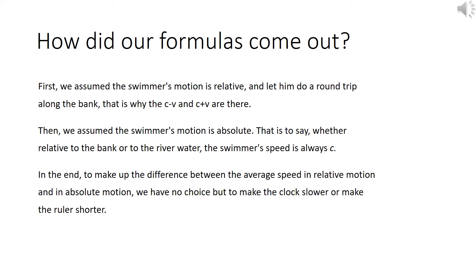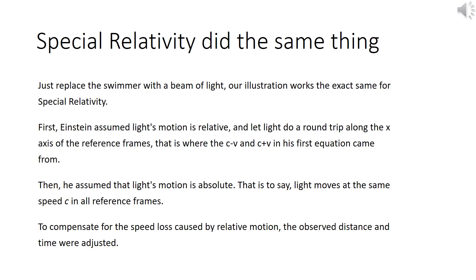In the end, to make up the difference between average speed in relative motion and absolute motion, we have no choice but to make the clock slower or make the ruler shorter. It seems that special relativity follows the exact same process. Just replace the swimmer with a beam of light. Our illustration works the exact same for special relativity.